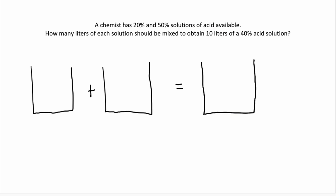So our first sentence tells us a chemist has 20% and 50% solutions of acid available. Since that's what we have available, those are the two buckets that we're going to end up combining together. So we have a 20% and we have a 50%. And then our second sentence says, how many liters of each solution should be mixed to obtain 10 liters of a 40% acid solution? So 10 liters of 40% is what we want to end up with. So that's our last bucket.